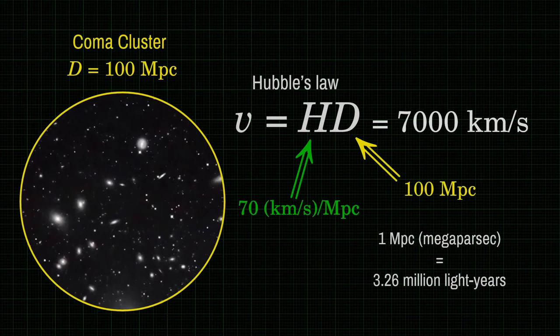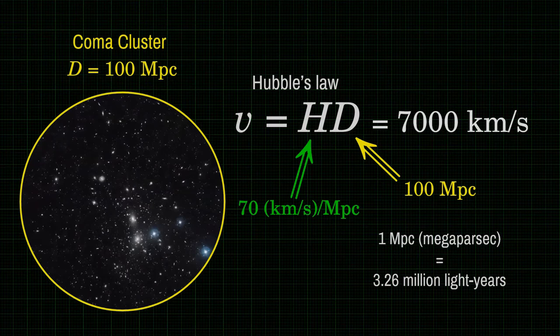They fly away from us at 7,000 km per second, about 2% of the speed of light. But this is the result of the expansion of space over large distances.